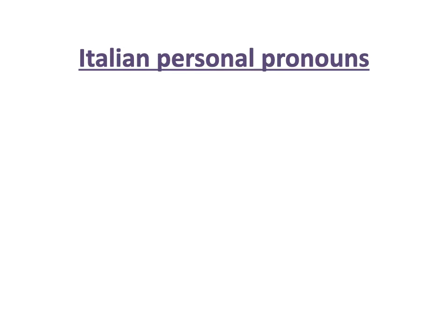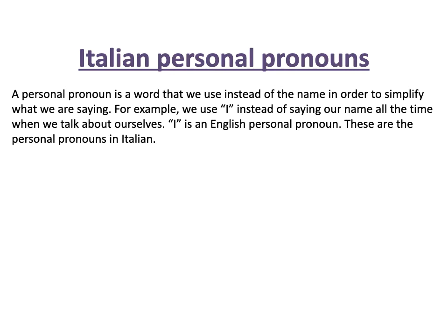First I'm going to remind you of this, which we presented very briefly in the last video: Italian personal pronouns. So what are personal pronouns? Pronouns are basically words that we use instead of the whole name of something or someone when we want to simplify what we're saying. For example, if I want to refer to myself I could say Umberto all the time, but we want to make it shorter so we say I. I is a personal pronoun in English.